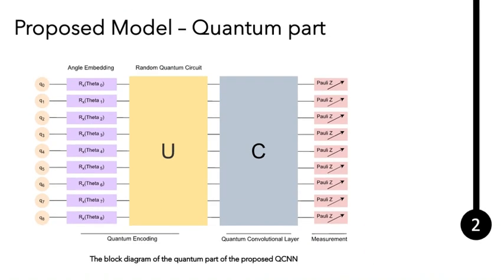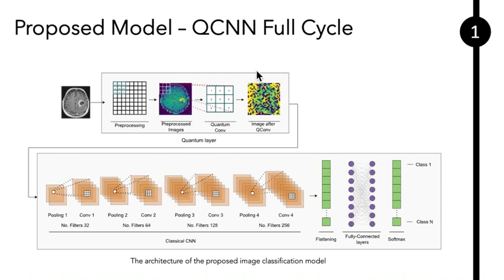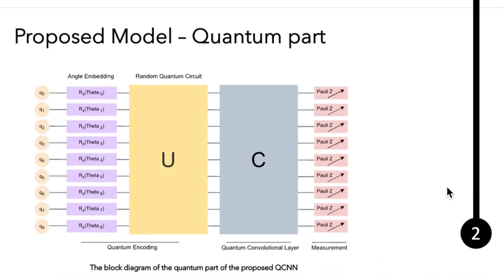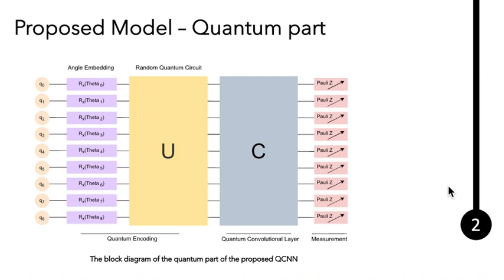And this is the second part, a zoom in of the architecture. We have here, as I said, the convolutional layer. This is the detailed figure for the convolutional layer, or we can say the block diagram of the quantum part of the proposed QCNN.